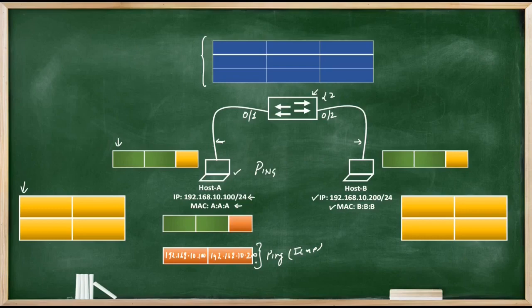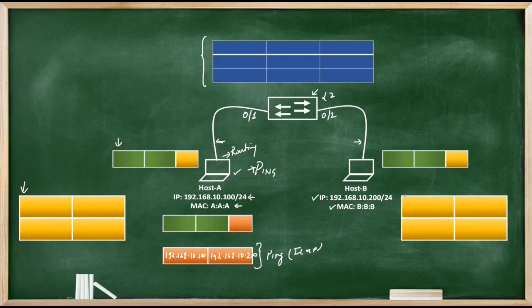But here is the thing — what exactly happens behind the scenes when Host A sends the ping packet towards Host B? When Host A generates the ping packet, it needs to route it towards Host B. Routing starts from the host itself. As a first step, this host will check whether the destination address of the ping packet — 192.168.10.200 — is part of its own network.